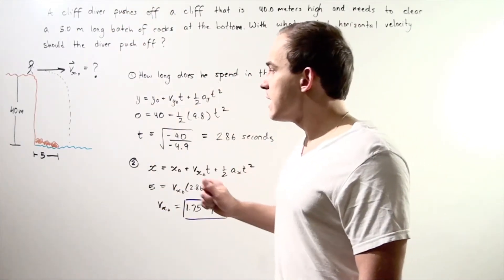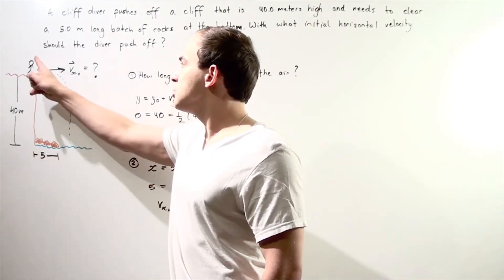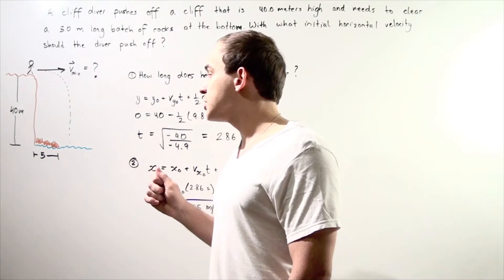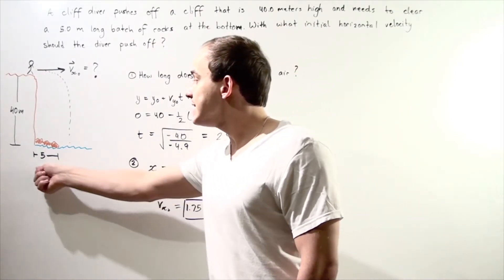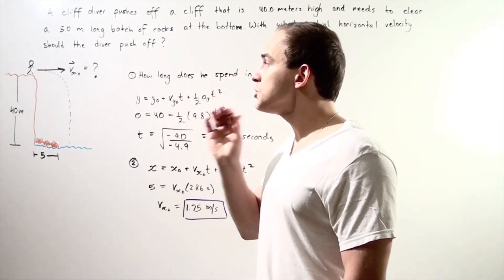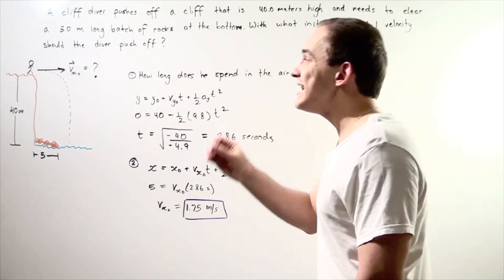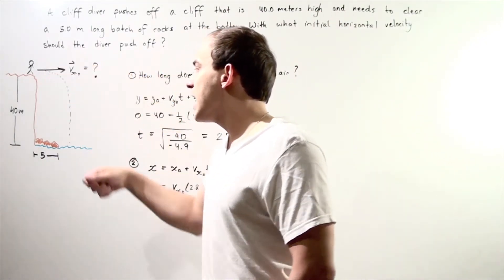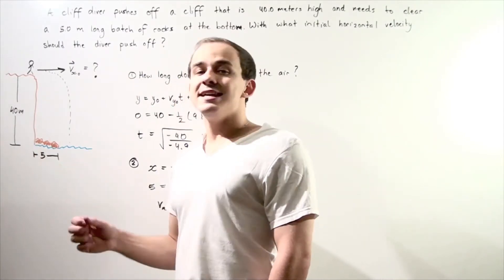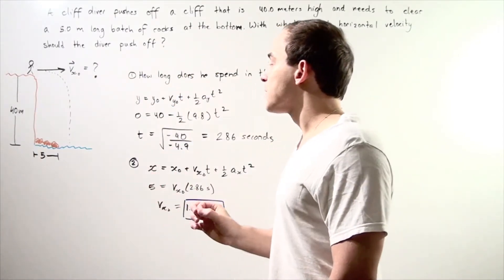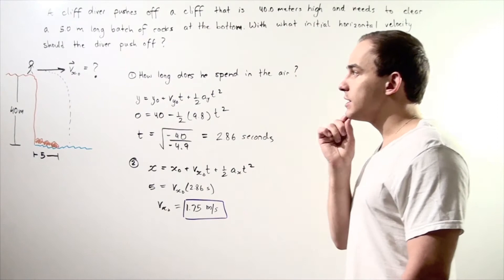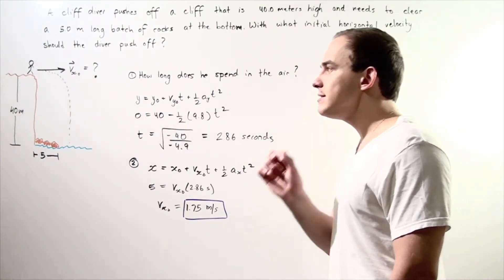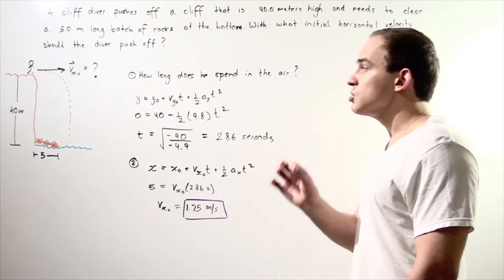We're making the assumption that at this initial position along the x-axis, we have 0, and the final position along the x-axis is 5 meters. We're also making the assumption that our initial position along the y-axis is 40 meters and our final position is 0 meters. Finally, we're also making the assumption that our initial vertical velocity is 0 meters per second.